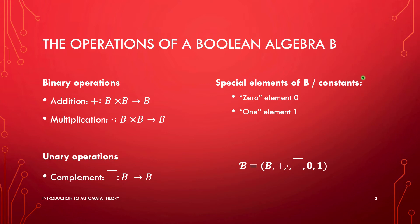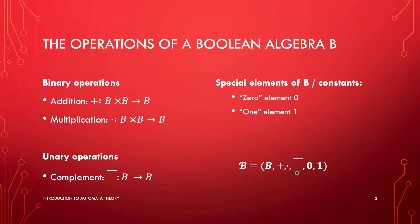A Boolean Algebra also has two special elements, or constants. On one hand, there is a so-called zero element, and on the other hand, there is a so-called one element. It's going to become clear in just a moment why we call these zero and one. So a Boolean Algebra is a structure consisting of a base set with two binary operations, one unary operation, and these two special elements — zero and one.